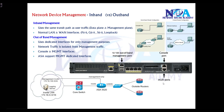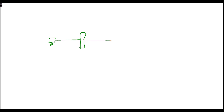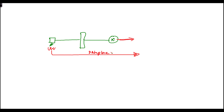Network devices can be managed either via in-band or out-of-band management. The basic difference between these two is that in in-band management we have two different types of traffic. For example, a computer connecting to my LAN and to a router can generate normal data plane traffic — the actual traffic moving across the network when a user is trying to access resources on the internet or a remote LAN.